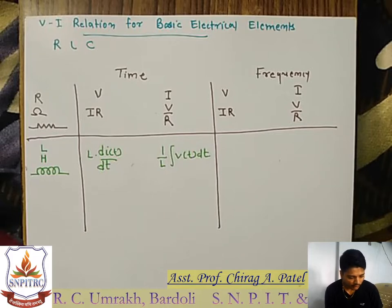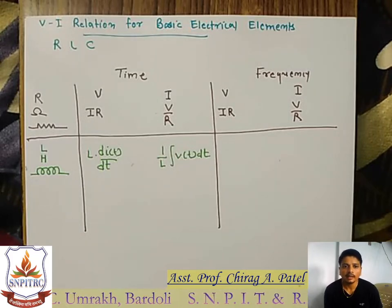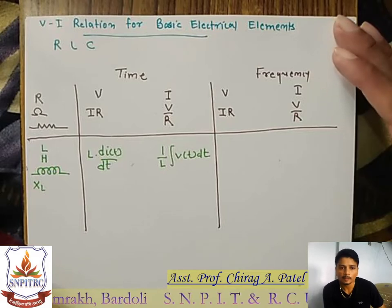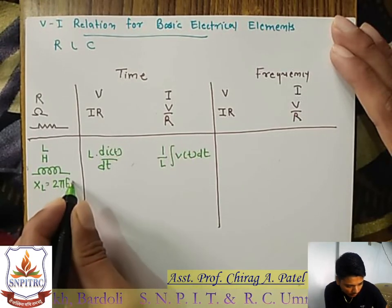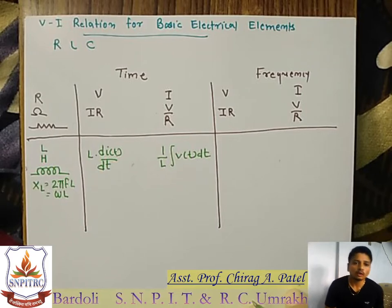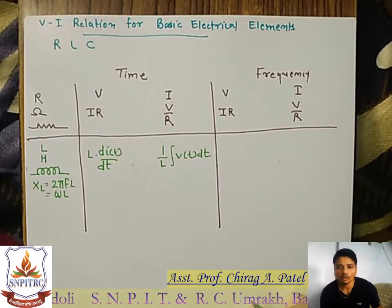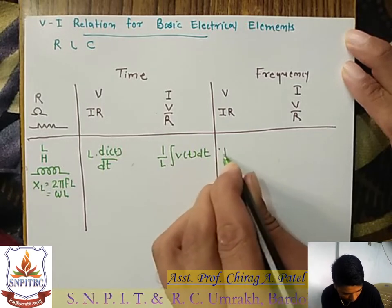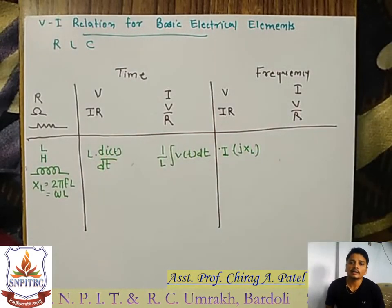Whenever we write the equation for the inductor in frequency domain, we require the reactance of the inductor, that is XL. What is XL? It is equal to 2πfL, or you can write omega·L. If the frequency is given in hertz, that is 2πfL; if it is given in radians per second, that is omega·L. Now the voltage across the inductor in frequency domain is a simple equation: V is equal to I into j·XL.